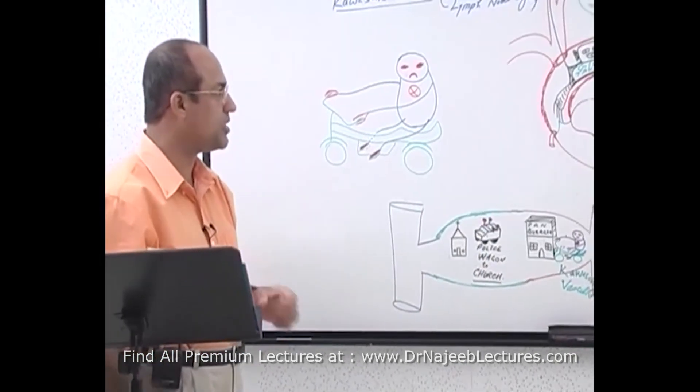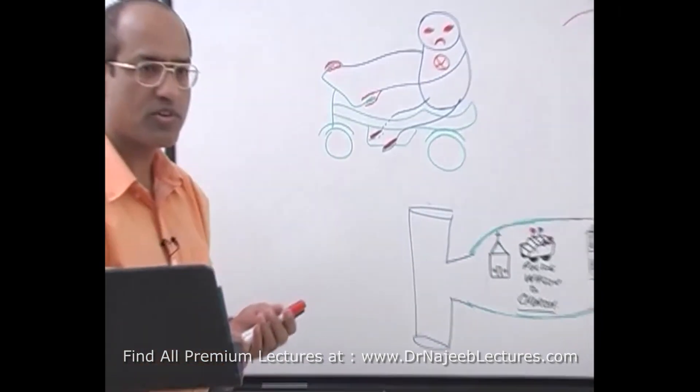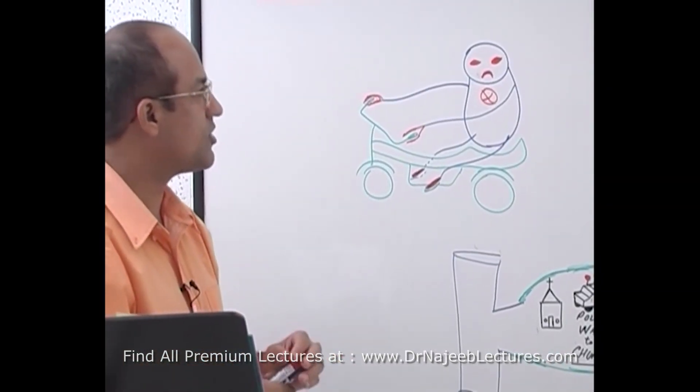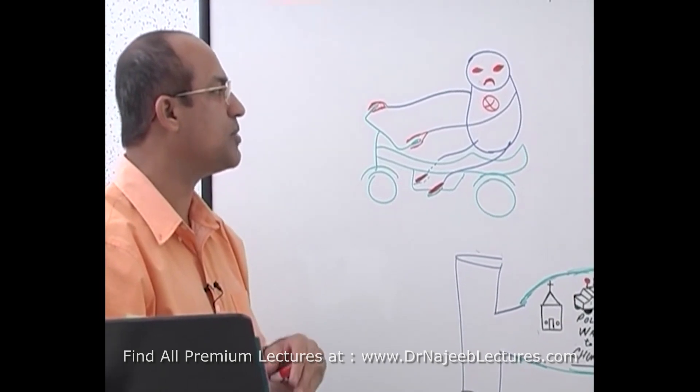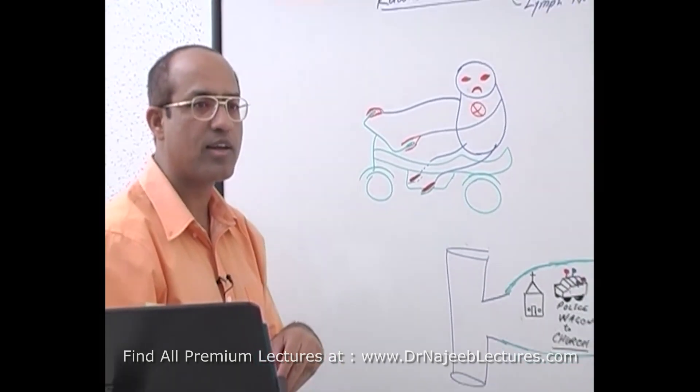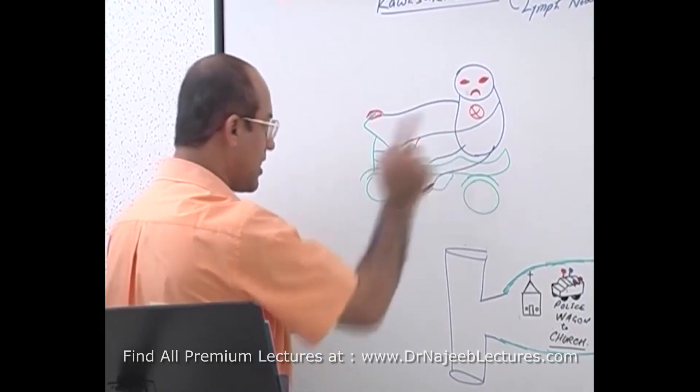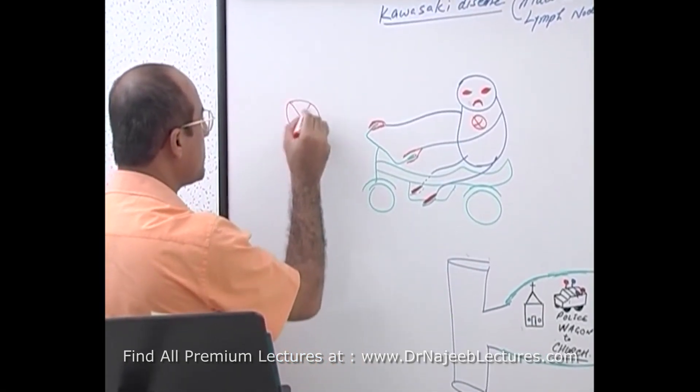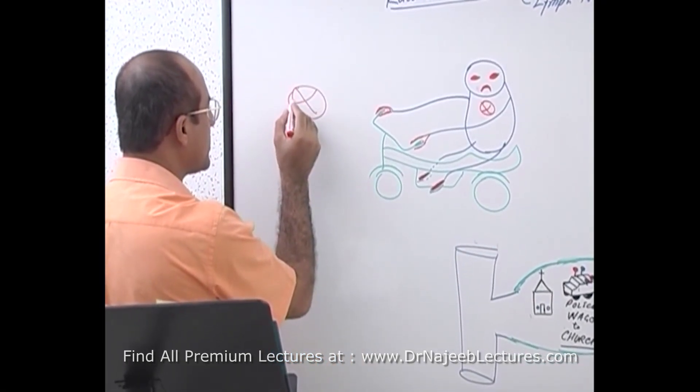Now this is Kawasaki baby. What are the real features of this disease? Number one, in this disease a very important thing is that medium size arteries are inflamed. Let's look at the heart. You know heart is supplied by which arteries? Coronary arteries.